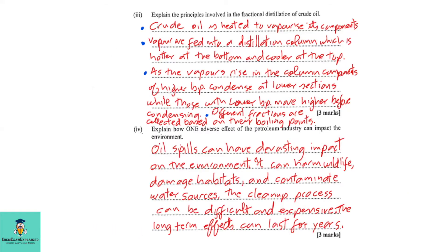Part b, question three: Explain the principles involved in the fractional distillation of crude oil. Firstly, the crude oil must be heated to vaporize its components. The vapors are then fed into a distillation column which is hotter at the bottom and cooler at the top. As the vapors rise, components of higher boiling point condense at lower sections, while those with lower boiling point move higher before condensing. Different fractions are then collected based on their boiling points.